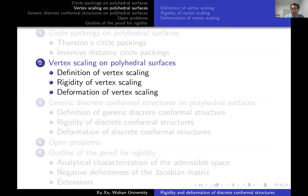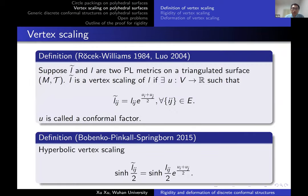Another important discrete conformal structure is vertex scaling, introduced independently by Röckle-Williams and Luo. Suppose we have two piecewise linear metrics on a triangulated surface, l and l̃. l̃ is called a vertex scaling of l if there exists a function u defined on vertices such that l̃_ij = l_ij · exp((u_i + u_j)/2). This is a direct analog of the smooth conformal transformation; u is called the conformal factor.